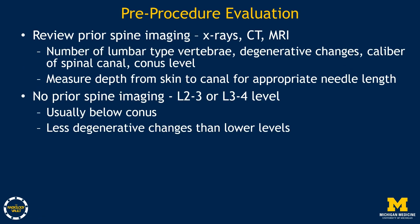It is critical to review any prior imaging to help in procedural planning. Factors to note include the number of lumbar-type vertebrae, degenerative changes, the caliber of the canal, and the conus level. Cross-sectional imaging can also be very important in measuring the depth from the skin to the canal to help choose the appropriate length needle. If no prior spine imaging is available, the L2-L3 or L3-L4 levels are often chosen, as these are usually below the conus but have less degenerative changes than lower levels.